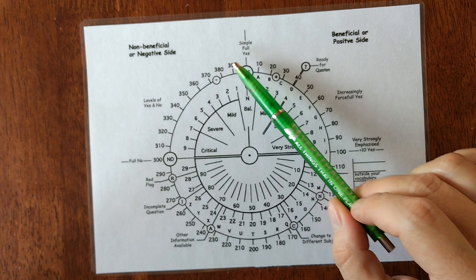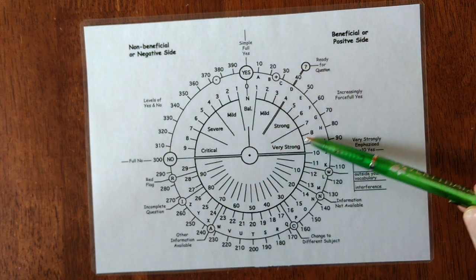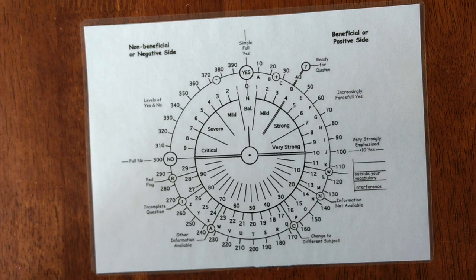You have two sections of the chart. One is here showing the negative side, one is the positive side. So for instance, if you want to check if some place, this place, is positive or negative for you to be.